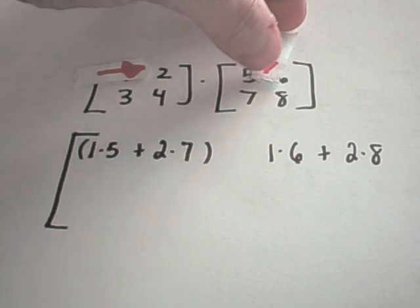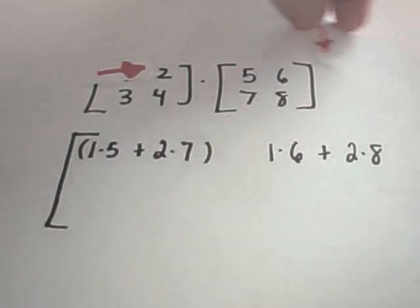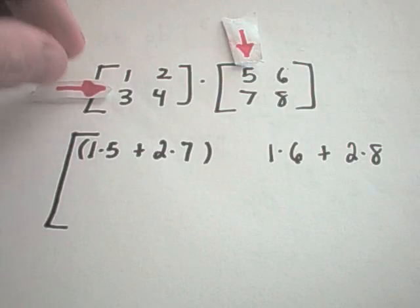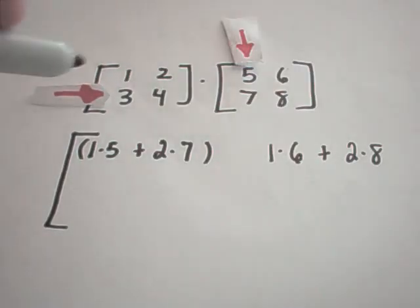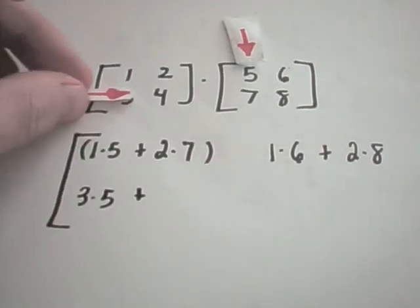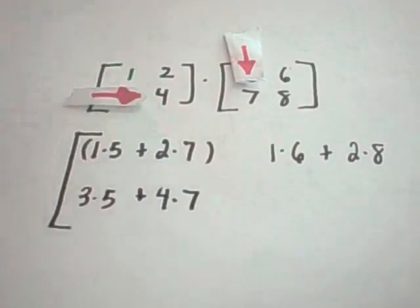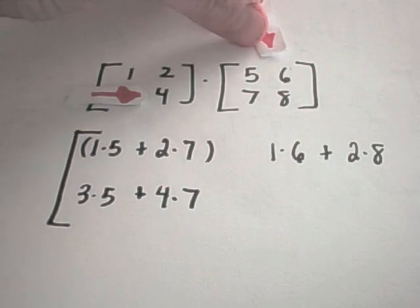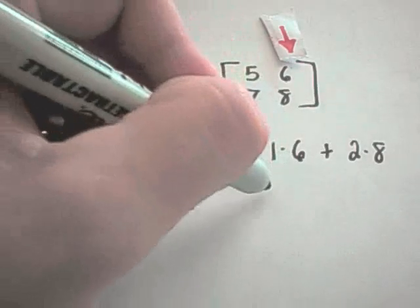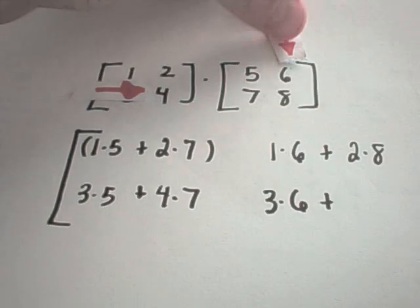So I'll take the first entry in the first row times the first entry in the second column. I'll get 1 times 6, and then I'll add to that, the second entry in the first row, the second entry in the second column. I'll get 2 times 8. And now that I've multiplied the first row by every column, I now repeat this process with the second row. So I'll have 3 times 5, and then I'll move them both over, and then I'll add to that 4 times 7. And again, now I just repeat this whole process. I'll get 3 times 6, and then I'll add to that 4 times 8.